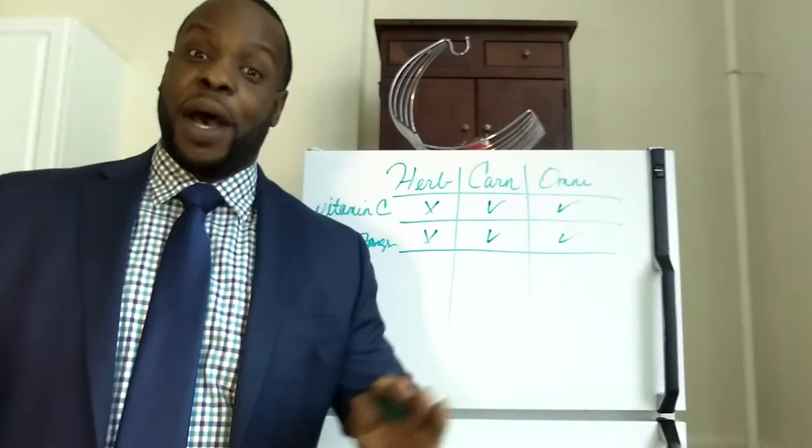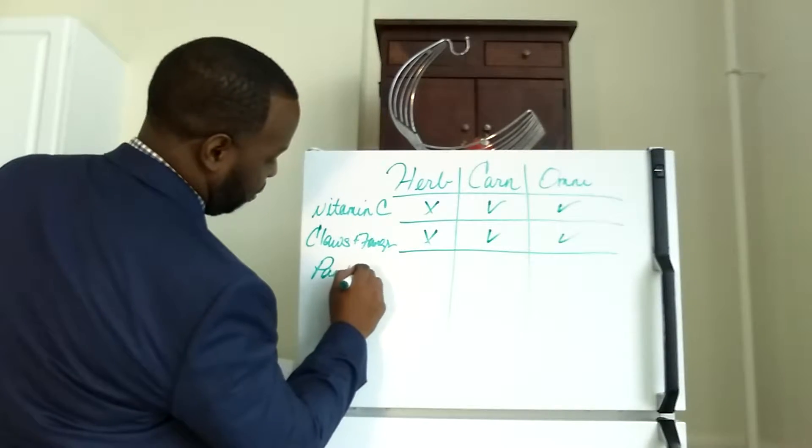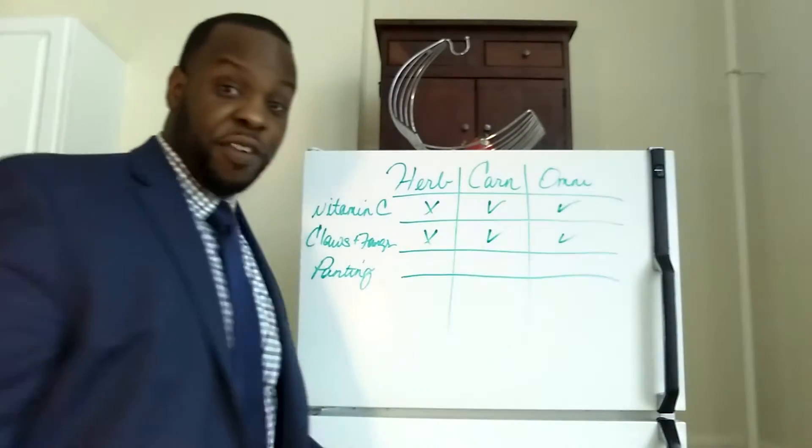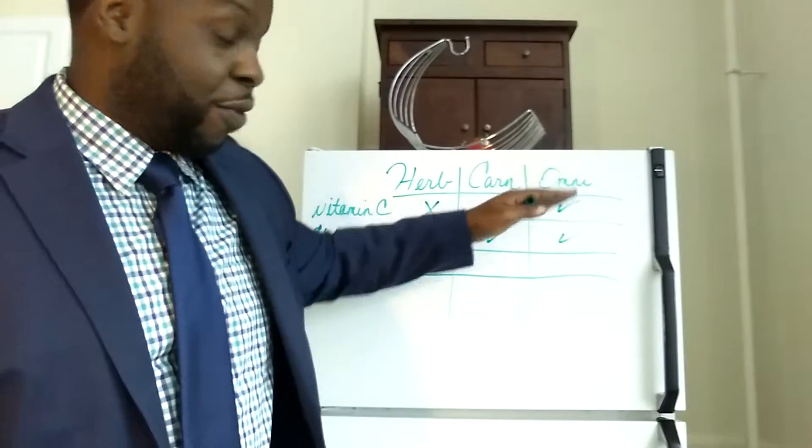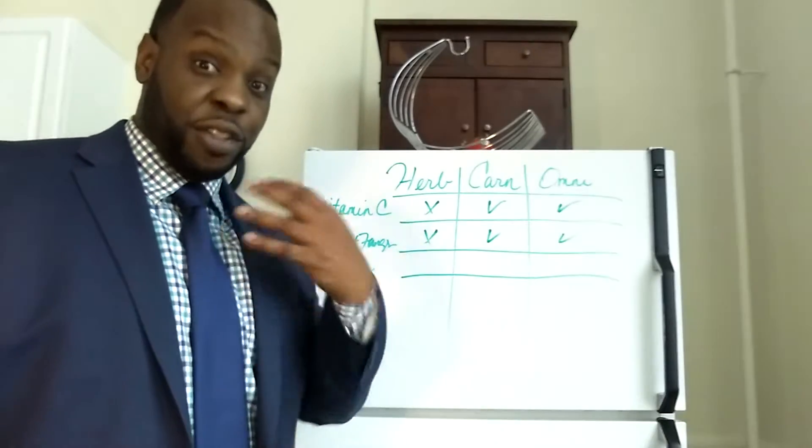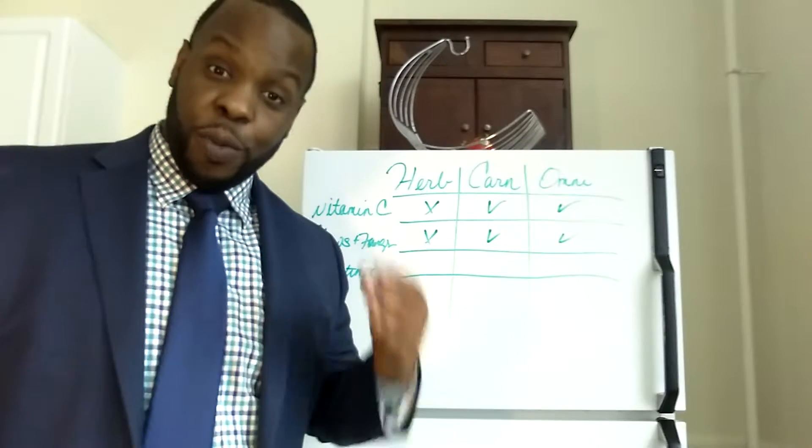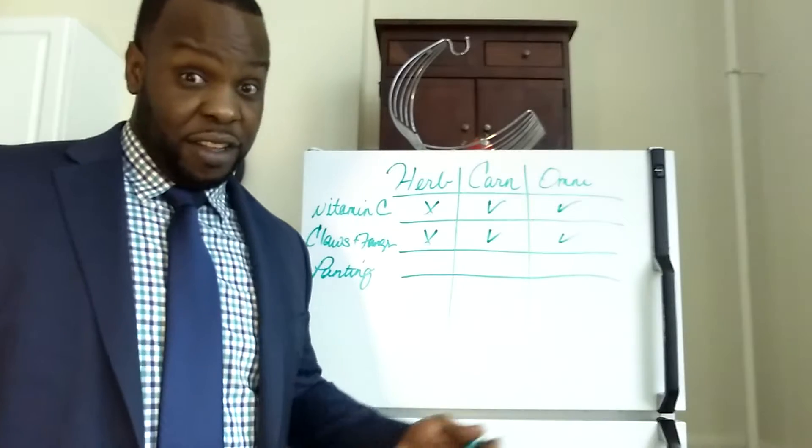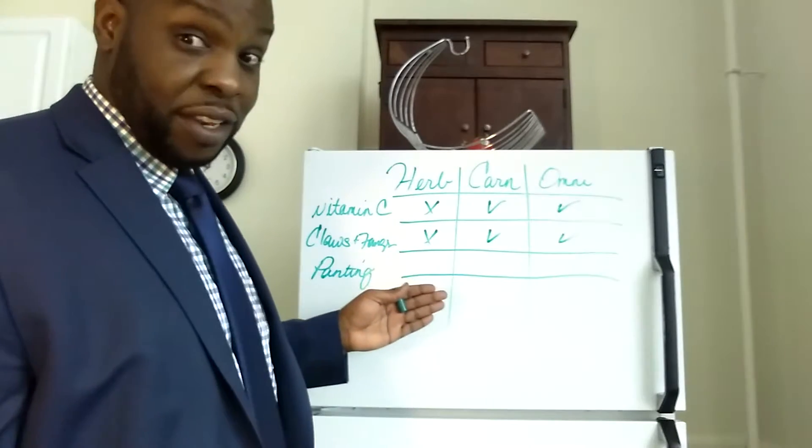Let's talk about body cooling. We can put here panting. As you know, especially if you have a dog, carnivores and omnivores cool their body by panting, through their mouth. They cool their body through their mouth. Herbivores cool their body through the skin, through sweating. Which one do humans do? We sweat.